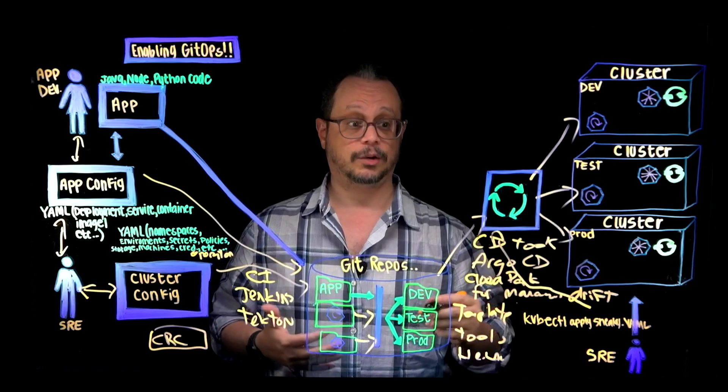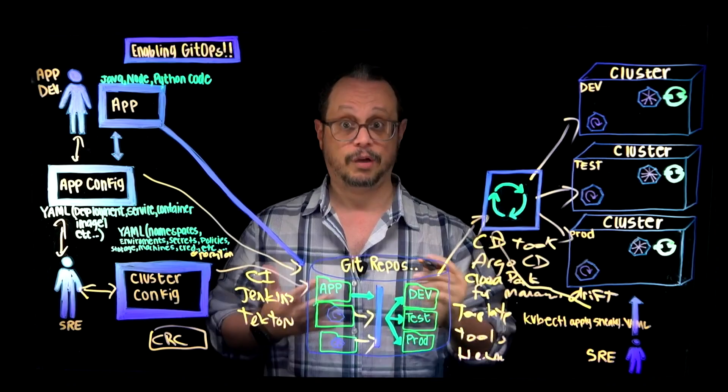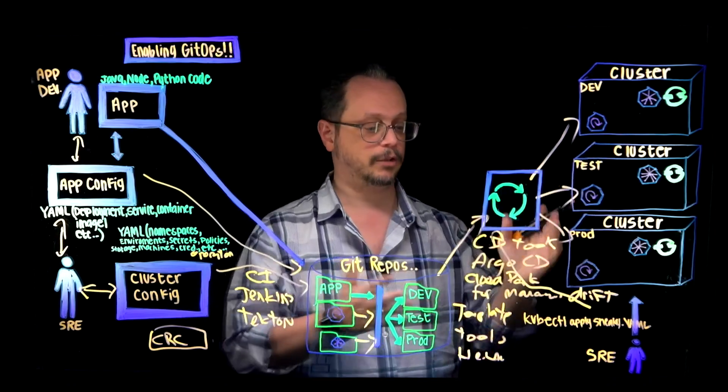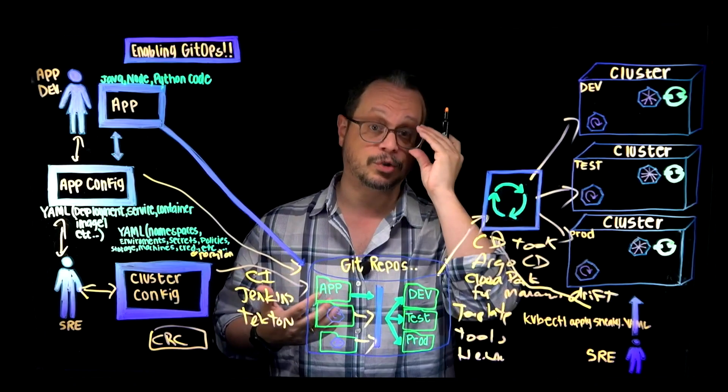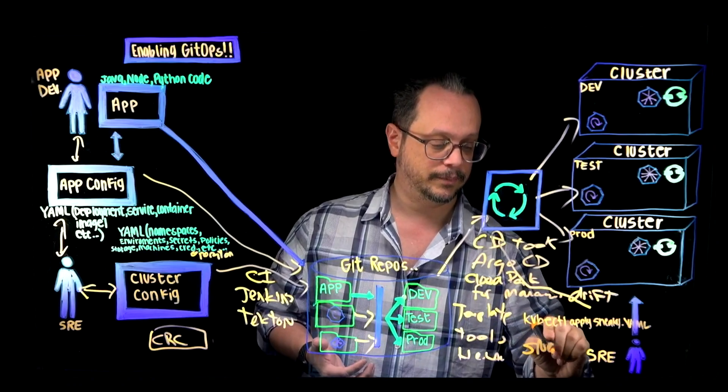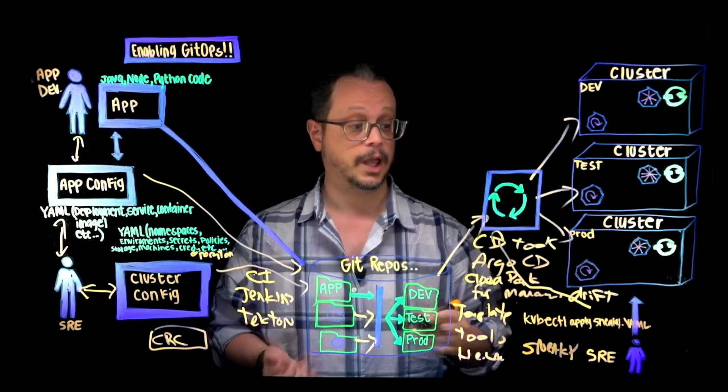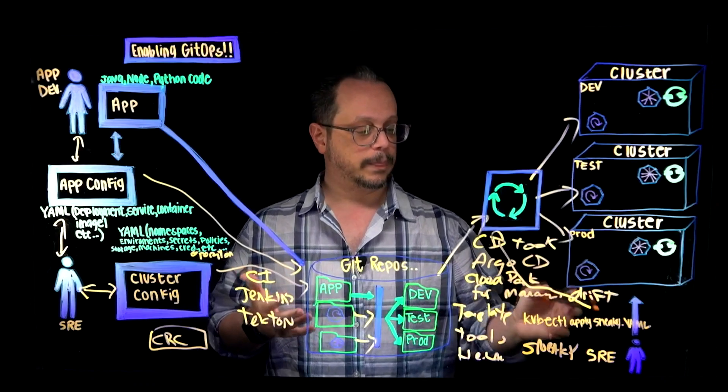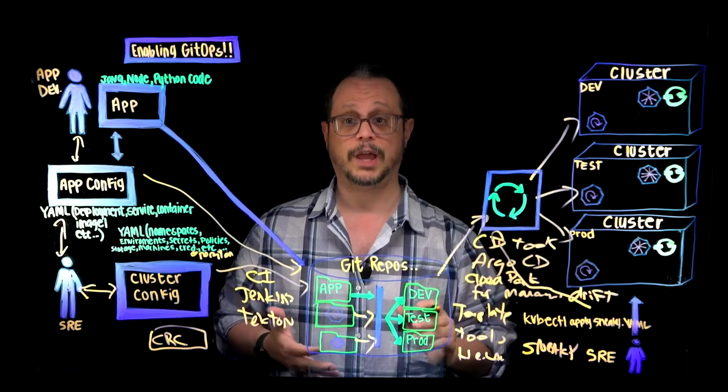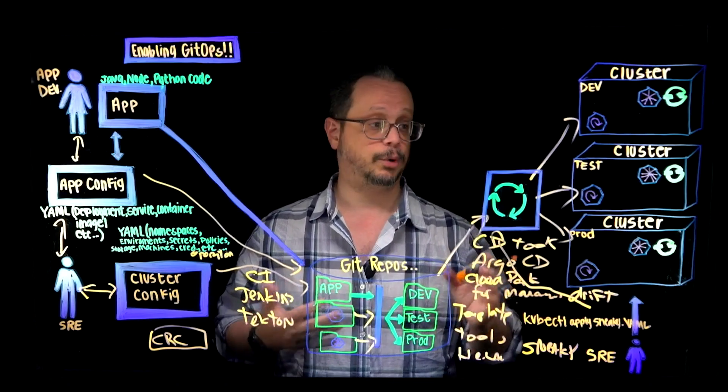For example, I can automatically detect drift and pull the state through a webhook from Git and reapply the state that's in Git back to the cluster. Maybe in a more controlled environment, there's a reason why this is happening. We'll just label them sneaky SRE. Maybe you want to not necessarily apply, but still detect drift and send out a notification or run a series of tests through post actions.